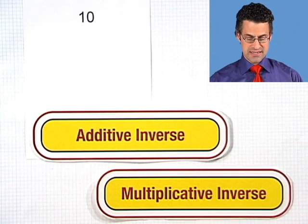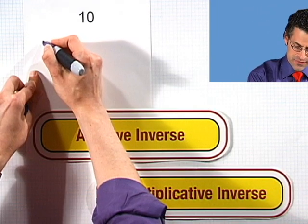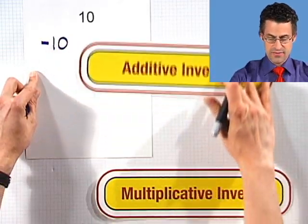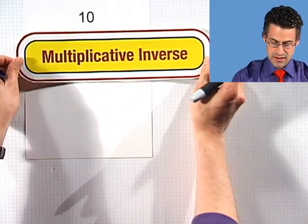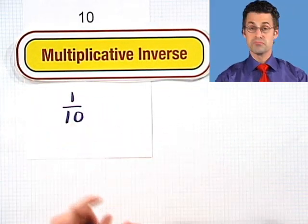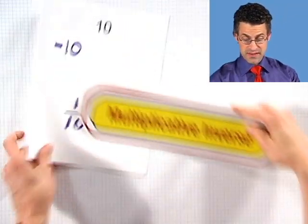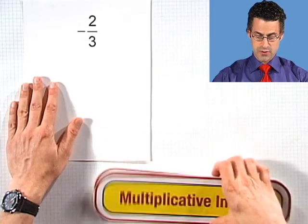For example, if we look at 10, the additive inverse is negative 10. And the multiplicative inverse? Well, I would take the reciprocal, which is 1 over 10. These have amazing properties because they allow us to solve all sorts of interesting equations.